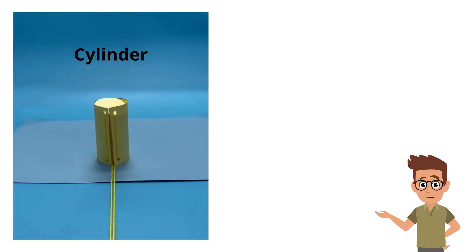Let us look at a cylinder. A cylinder is a 3D shape with two circular flat faces and one curved face. What does its net look like? Let's find out!